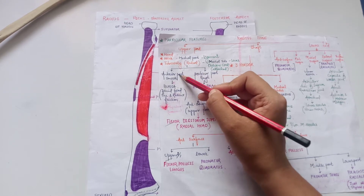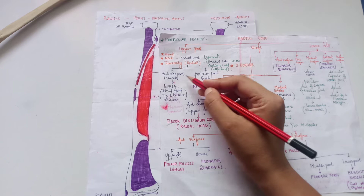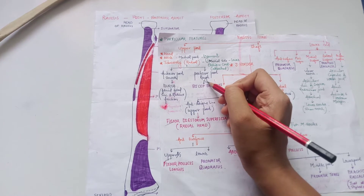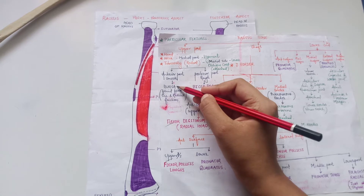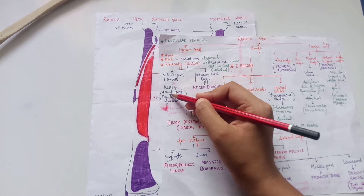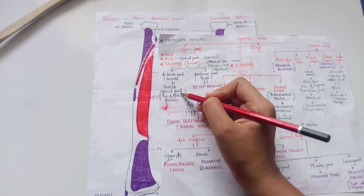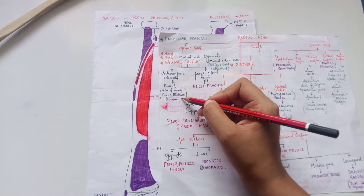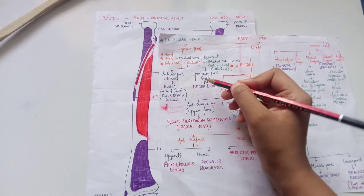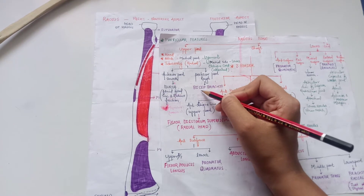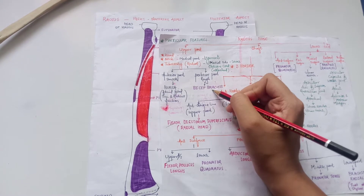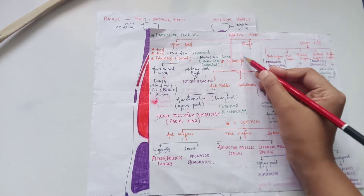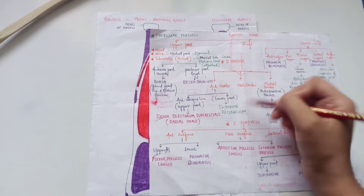The radial tuberosity has an anterior part and a posterior part. The anterior part is smooth and the posterior part is rough. In the smooth part, it has a bursa, which is a fluid-filled sac that reduces friction. In the posterior rough part, it has the insertion of the biceps brachii muscle.